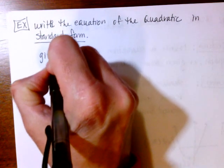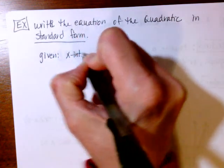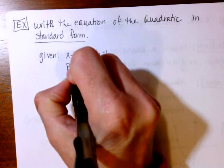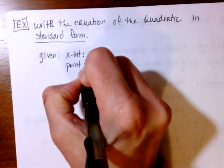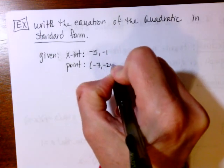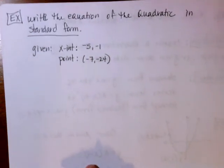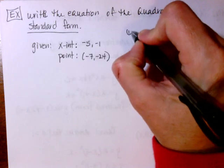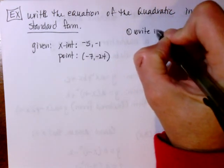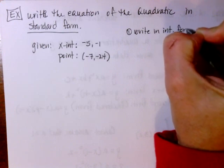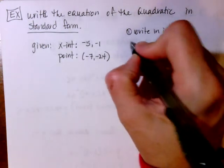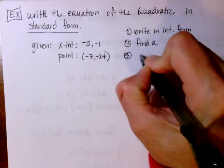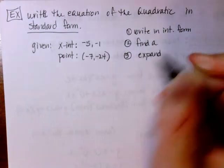The given information is that the x-intercepts are −5 and −1, and I'm given an additional point (−7, −24). The procedure is: write the equation in intercept form, find a, then expand to put it in standard form.